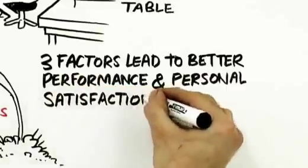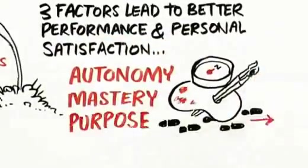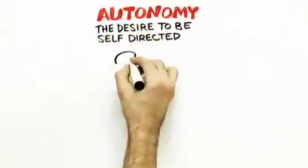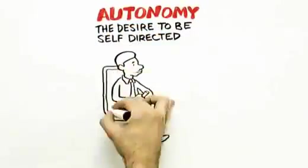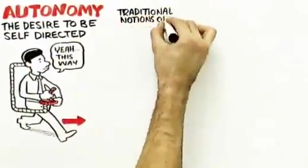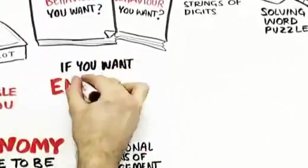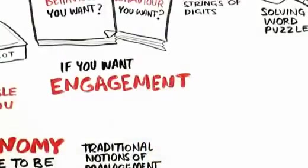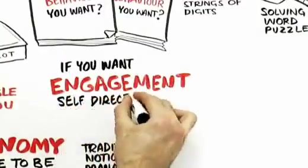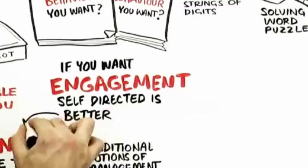Once you do that, it turns out there are three factors that the science shows lead to better performance. Not to mention personal satisfaction. Autonomy, mastery, and purpose. Autonomy is our desire to be self-directed, to direct our own lives. Now, in many ways, traditional notions of management run afoul of that. Management is great if you want compliance, but if you want engagement, which is what we want in the workforce today as people are doing more complicated, sophisticated things, self-direction is better.